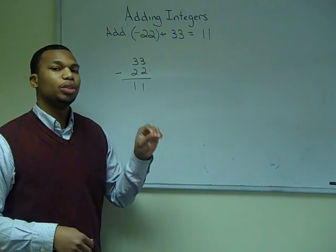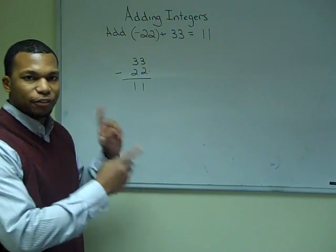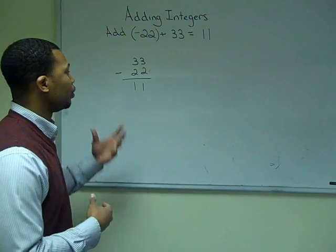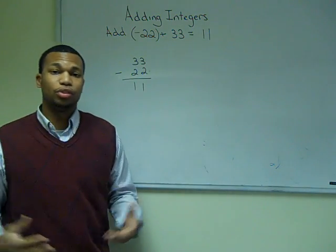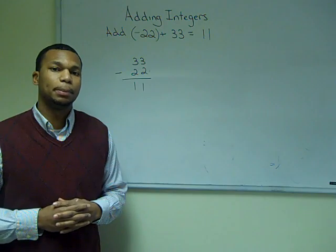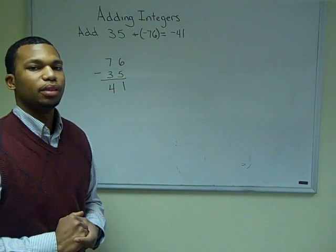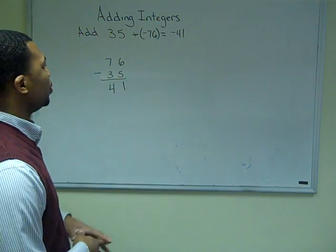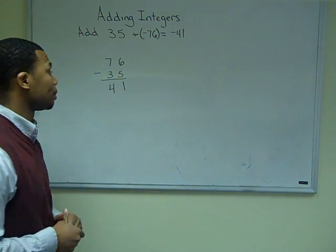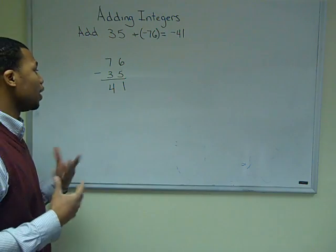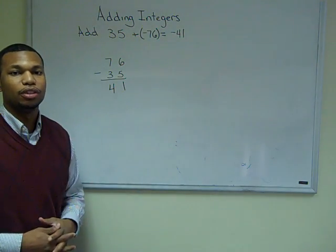In the next example, I have negative 22 and I'm adding positive 33. My answer is going to be 11. Because I have different signs, I first subtract: 33 minus 22 gives 11. Since I have more positives than negatives, my answer is positive 11. In the next example, positive 35 plus negative 76 gives negative 41. Because the signs are different, I subtract: 76 minus 35 is 41. Since I have more negatives than positives, my final answer is negative 41.